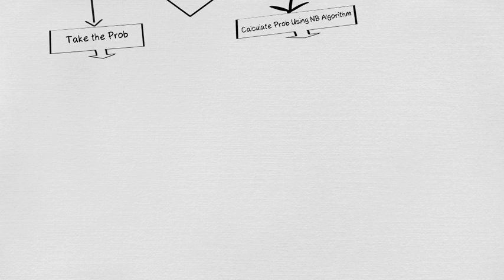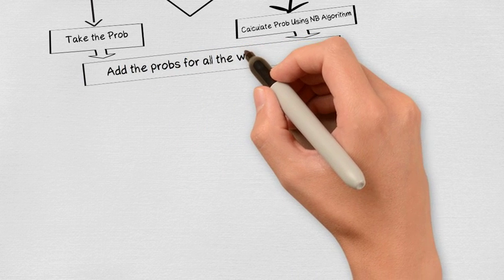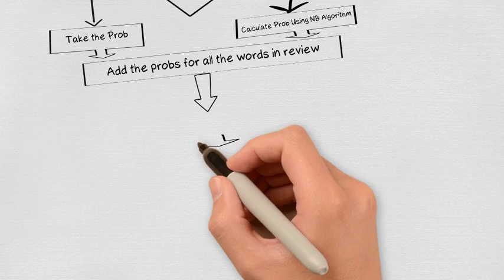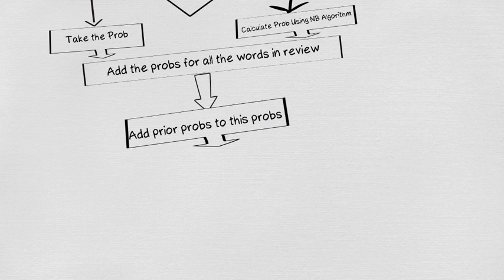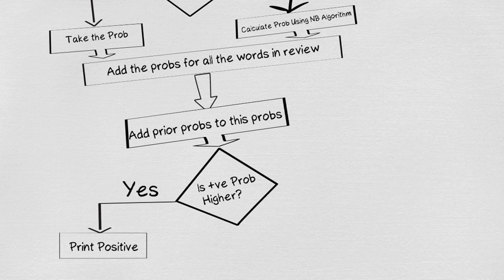After repeating this for all the words, we add these probabilities individually for both positive and negative along with prior probabilities. Now if the positive probability is higher, we say it is positive or else we say it is negative.